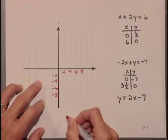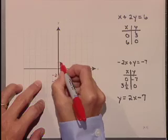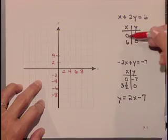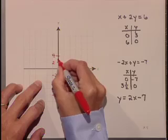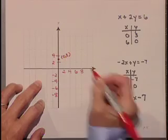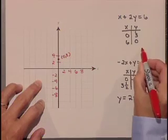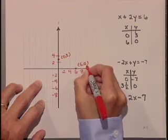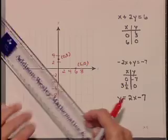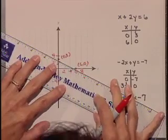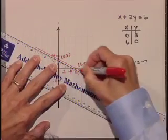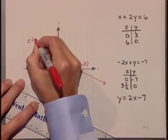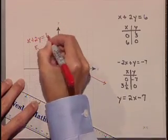Let's plot points. For this first equation, its y intercept is 0, 3. Its x intercept is at 6, 0. And let's connect the points. That is the line x plus 2y is equal to 6.